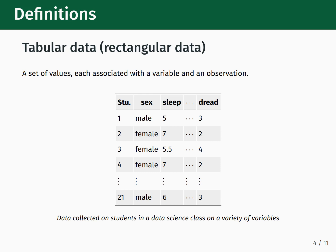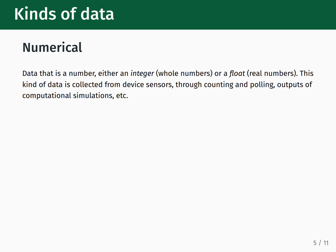The data that we'll encounter can come in different types, so let's review those now. First up, we have numerical data, which is data that is a number, such as an integer — meaning whole numbers — or a float, meaning real numbers. Some examples of numerical data include measurements from device sensors, counting and polling people on some given set of questions, and looking at the outputs of computational simulations.